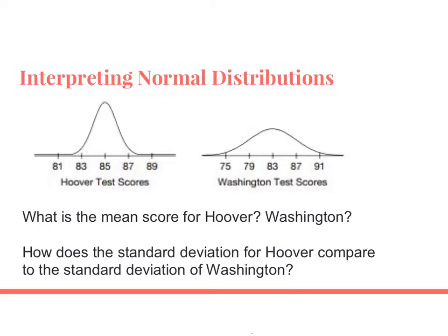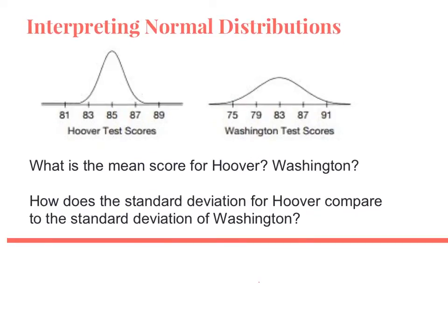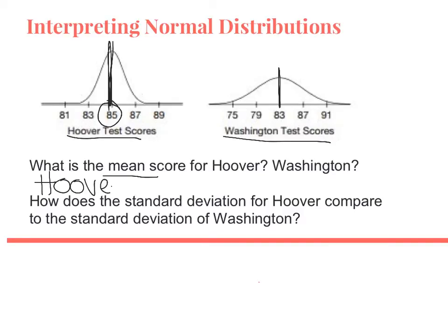Let's look at an actual set of data and interpret these normal distributions. We have test scores from Hoover High School and test scores from Washington High School. Since these are normally distributed, the mean should cut the data perfectly in half. For Hoover High School, the mean is 85. For Washington, the mean is 83.